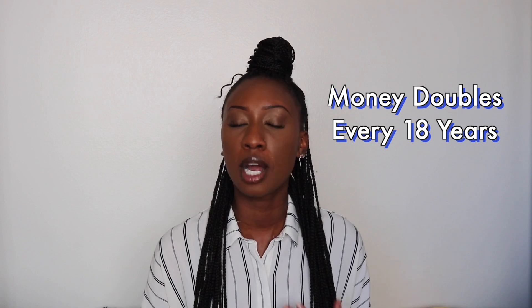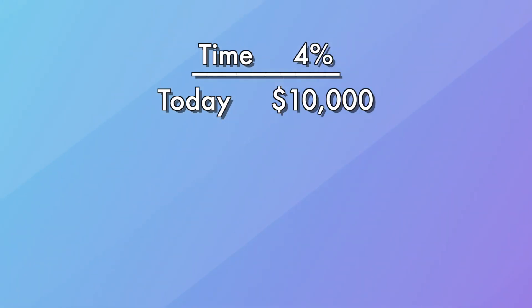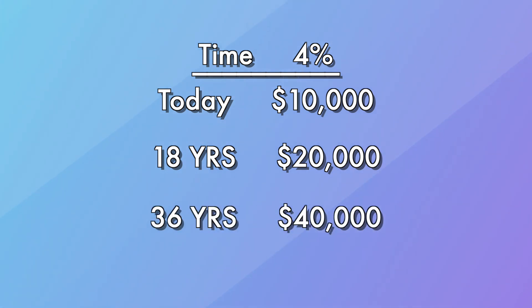Let's do an example. Say we had an account with a 4% interest rate. If we plug that into the rule of 72, we know that 72 divided by 4 equals 18. So we know that in our 4% interest account it's going to take 18 years for our money to double. So let's say we put a $10,000 investment in that account today. Within 18 years it would have doubled to $20,000, and within another 18 years — that's a 36-year time frame — it would have doubled to $40,000.